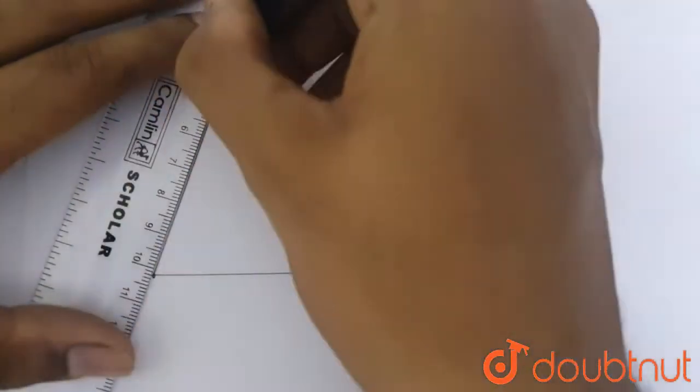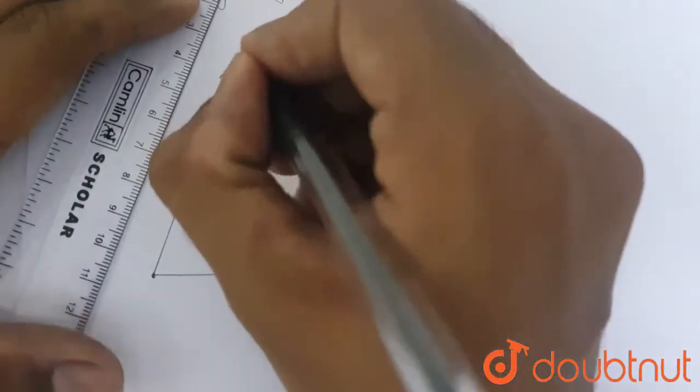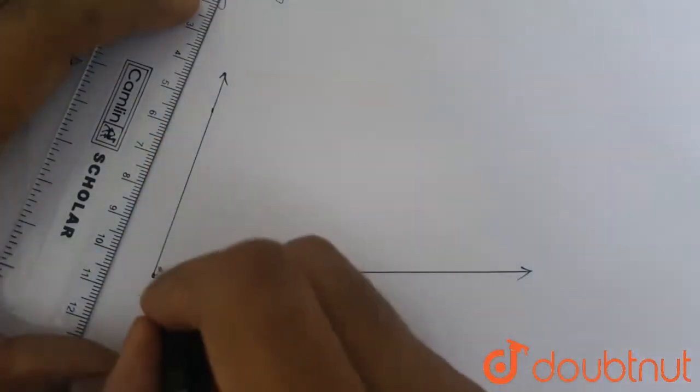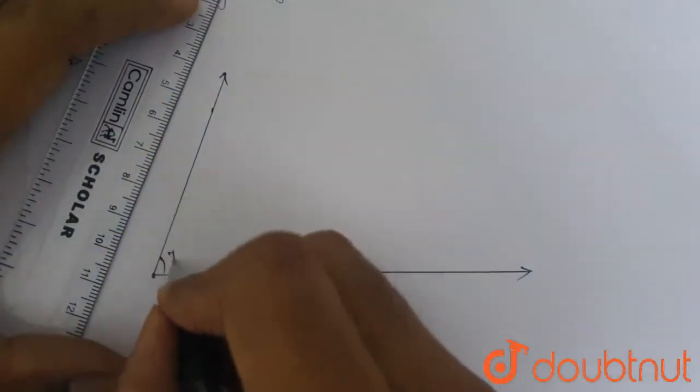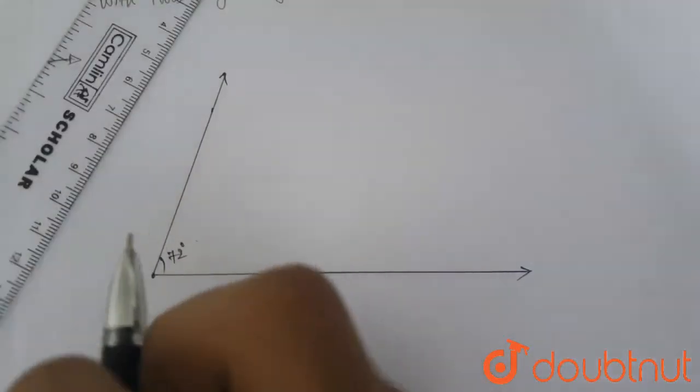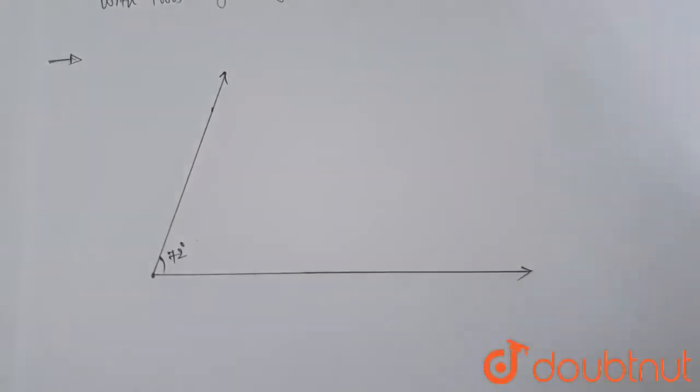We make this line and hence this is our angle of 72 degrees. Now we have to make an angle bisector for this angle, so for that.